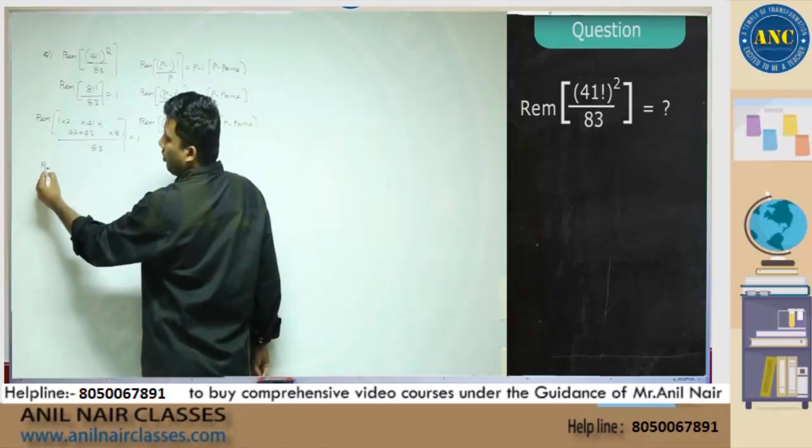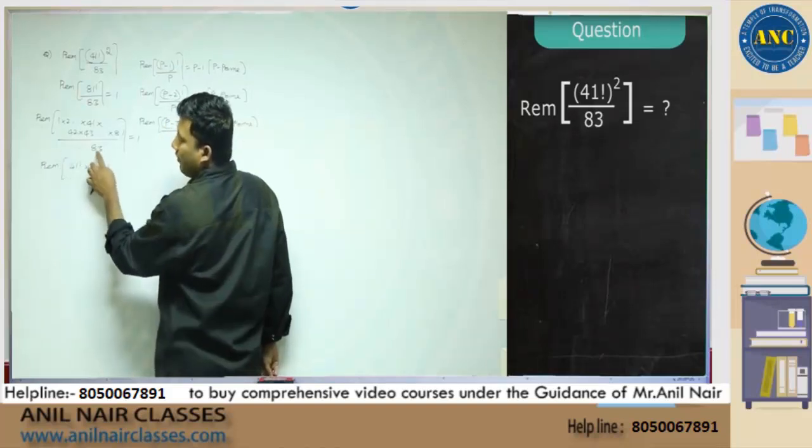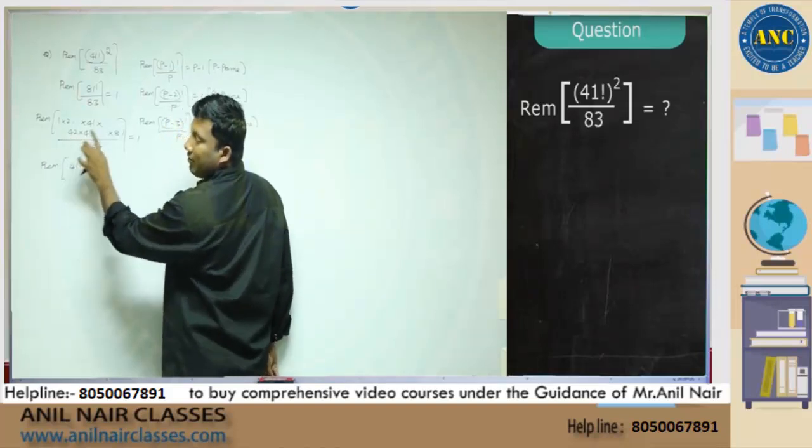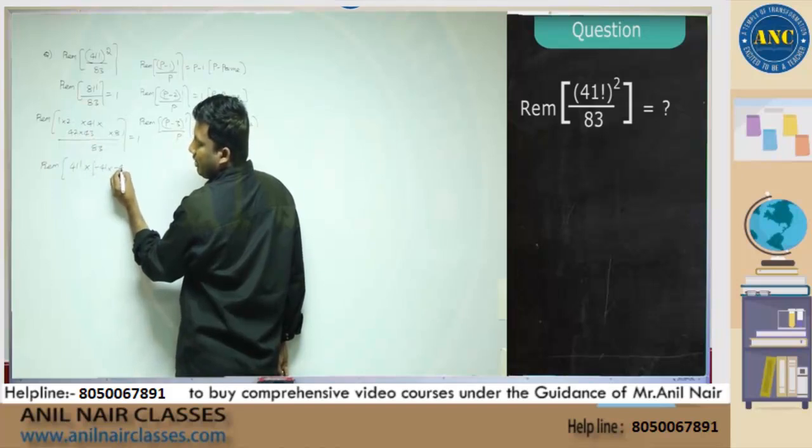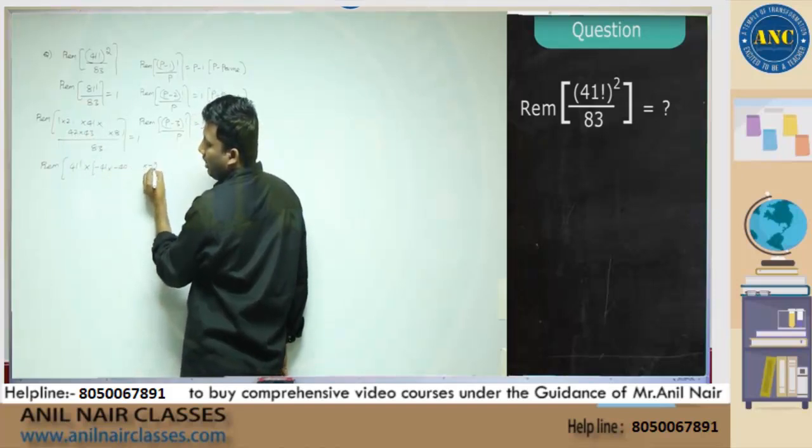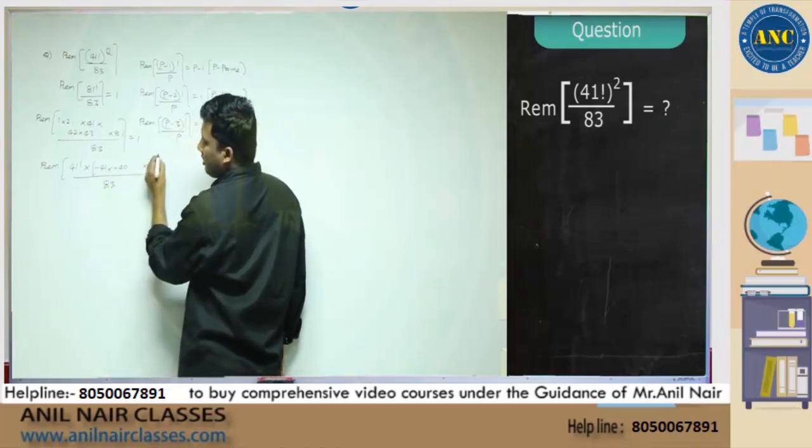1 into 2 till 41 is 41 factorial. 42 divided by 83: 83 ones are 83, negative reminder minus 41. 83 ones are 83, so it is minus 40. 81 by 83 is minus 2. When you further divide, answer does not change.